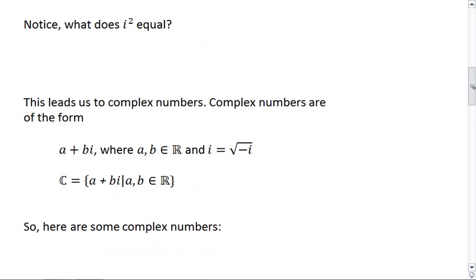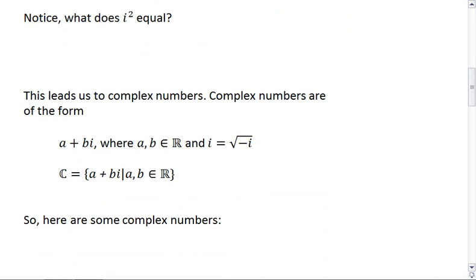It's important to notice though, that since i = √(-1), then i² = (√(-1))², and so it just equals -1. So we have i = √(-1), i² = -1, i³ would be i² × i.